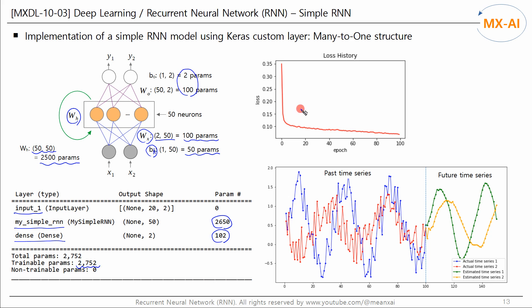Visually observing the history of the losses, you can see that the mean squared loss decreases significantly as training progresses. Looking at the past and predicted future time series, the blue and red are the observed past time series with some noise mixed in. The green and orange are the predicted future time series — two sine curves with different frequencies are predicted, and you can see that the noise has been removed. In this way, we can use recurrent neural networks to predict time series.